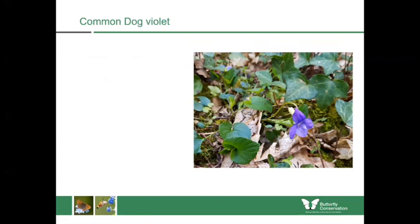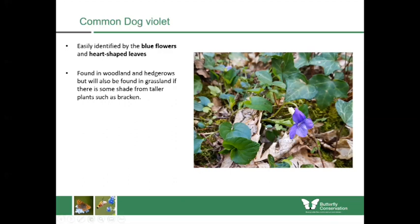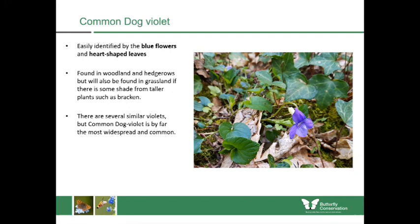Common dog violet is really important for butterflies, especially their caterpillars. It's easily identified by single blue flowers on each stem with a typical violet shape. You find these in woodlands and hedgerows, but also in grassland if there's some shade from bracken — which acts like a woodland for little plants like this, giving them shade and allowing them to be found in different places. Common dog violet is by far the most widespread and common violet species.